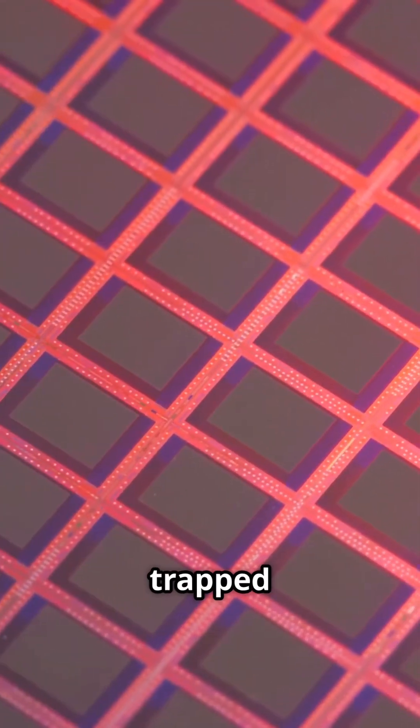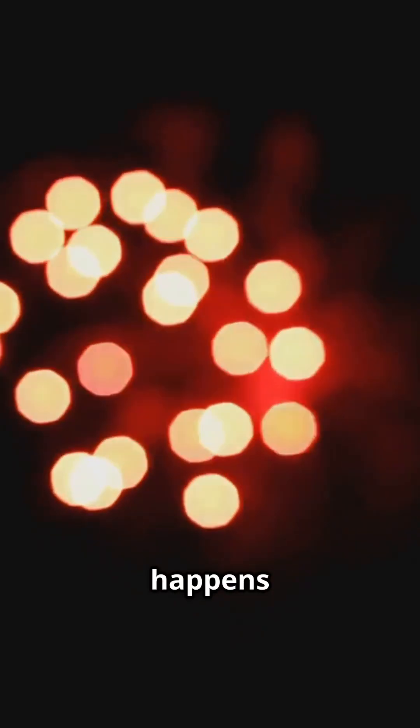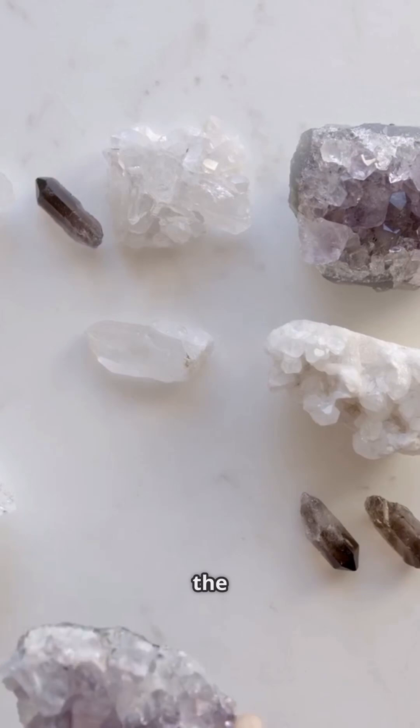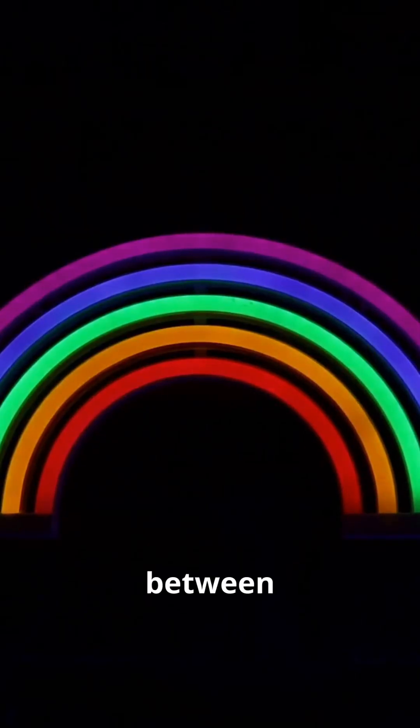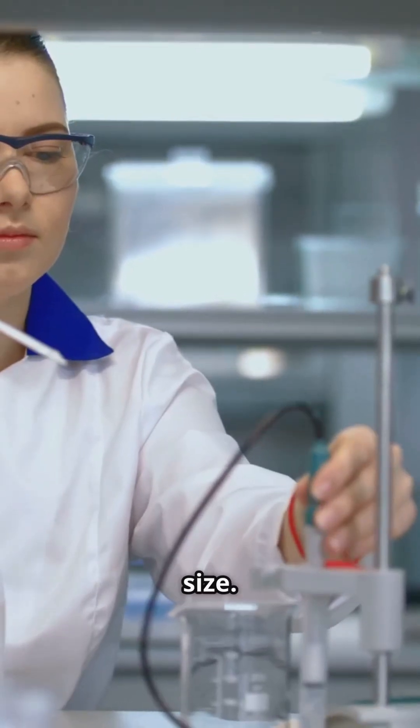When electrons are trapped inside these tiny dots, something wild happens. The color of light they emit changes based on how big or small the dot is. Tiny dots glow blue, bigger ones shine red, and every color in between is possible, just by tweaking their size.